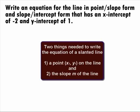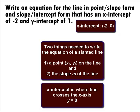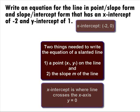There are always two things that we need to write an equation of a slanted line. One is one point that the line passes through. The other is the slope of the line. Keep in mind that the x-intercept is where the line crosses the x-axis, which means y equals 0. So the ordered pair for the x-intercept is negative 2, 0.